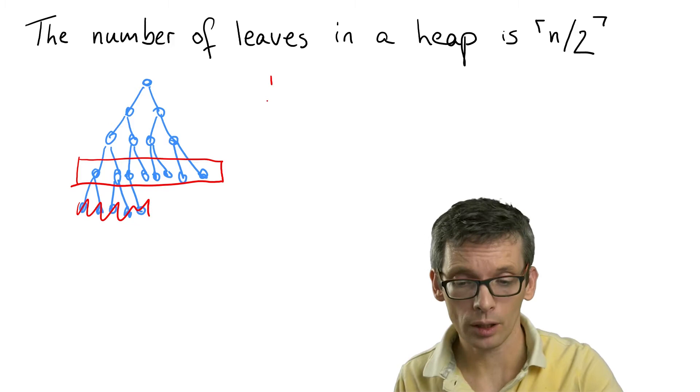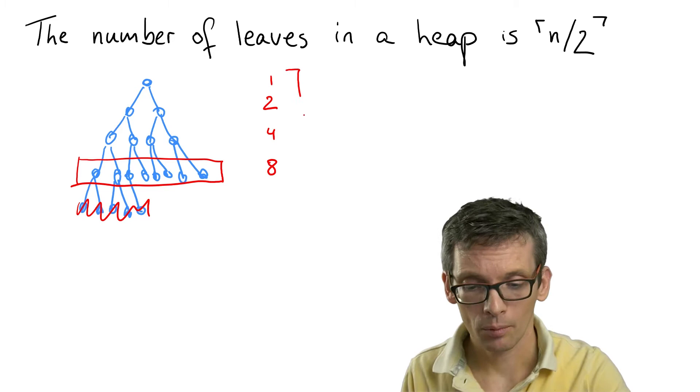Let's count how many nodes we have. So we have one in the first level, then two, four, eight. So eight is the number of leaves.